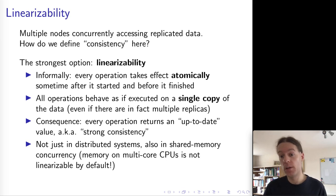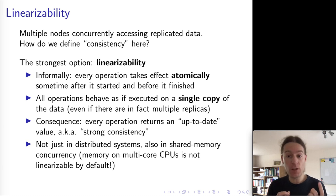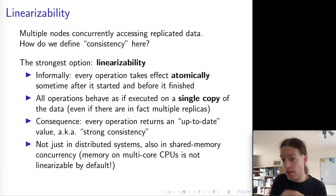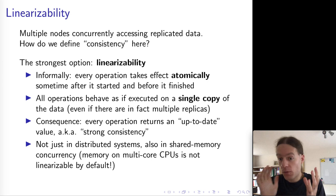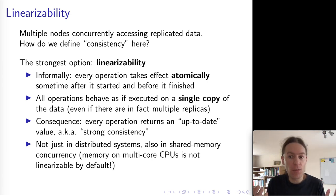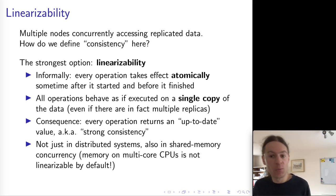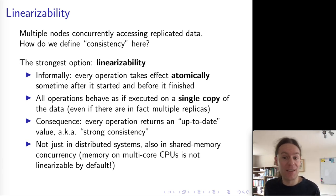Interestingly, linearizability is not only important in distributed systems — it is also used in the context of shared memory concurrency on a single computer. If you have multiple CPU cores, each CPU core has its own memory caches. If threads run on two different cores, one thread might write a value that goes to its cache, while a different thread reading the same location might not see that value because its cache hasn't been updated yet. These different levels of caches give you something quite like replication, so a single computer starts behaving a little bit like a distributed system.